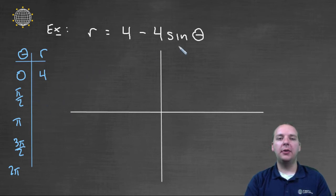If theta was pi over two, sine of pi over two is one, one times four is four, four minus four makes zero. If you plug in pi, I'll speed this along, r would be four.